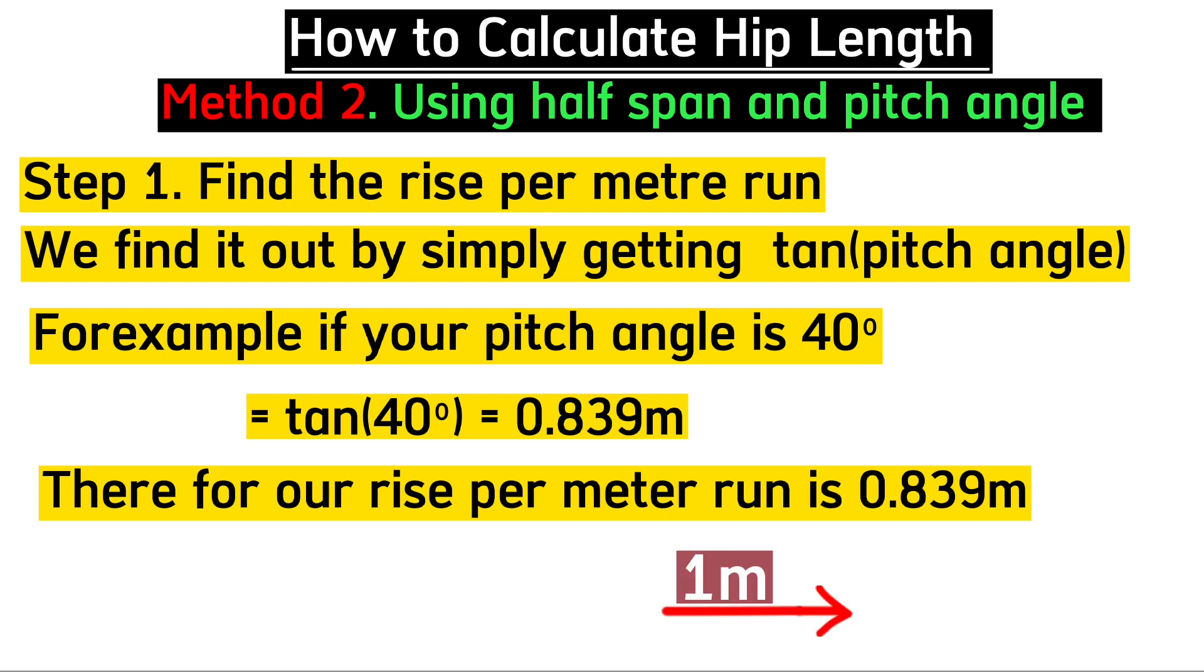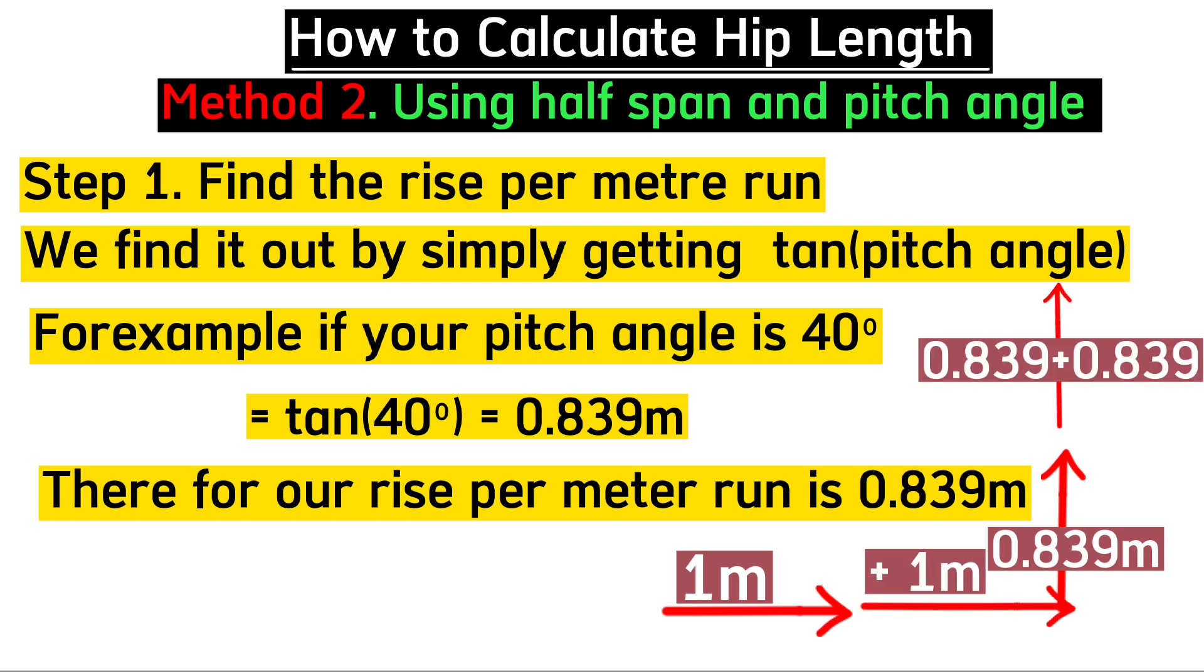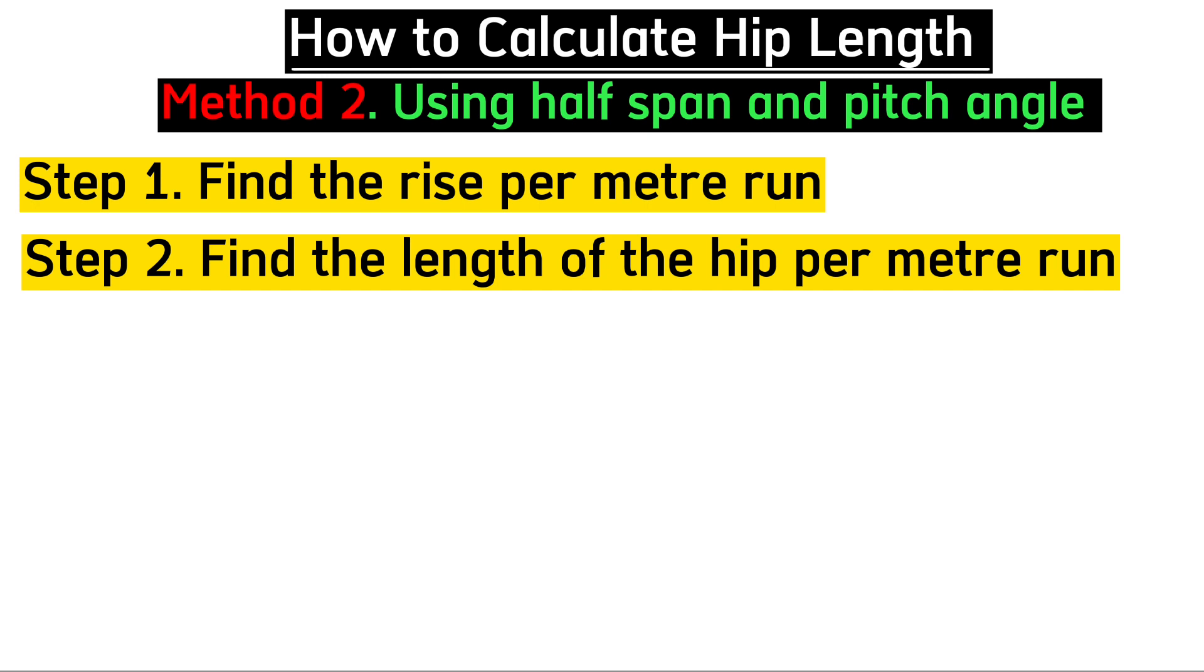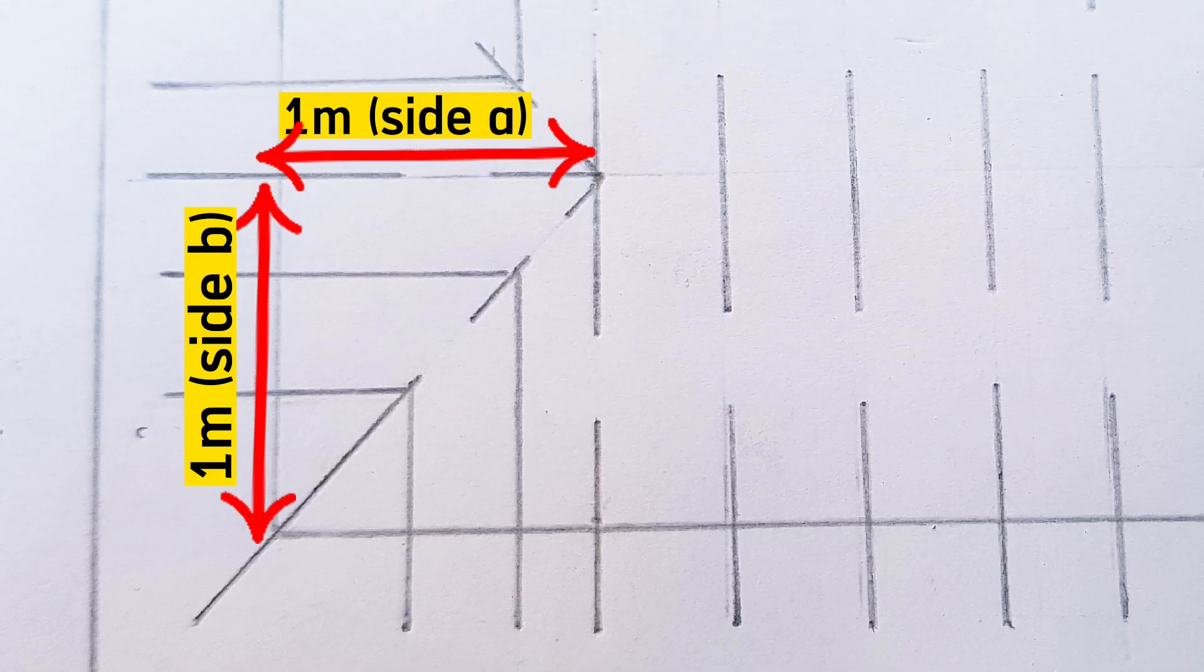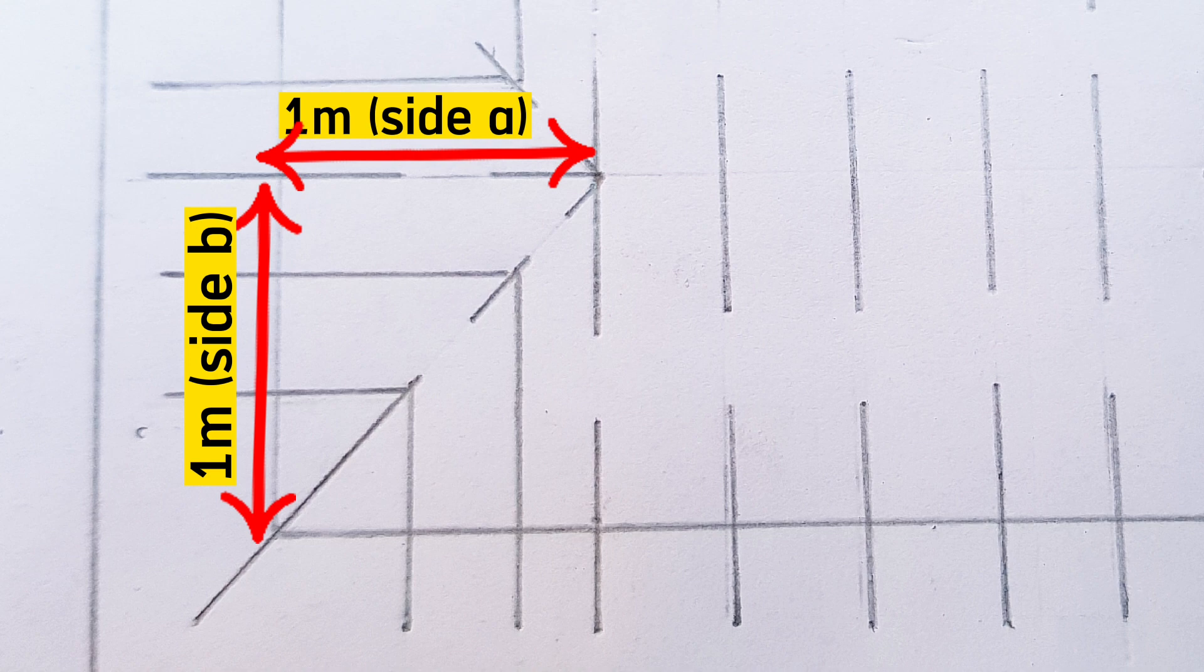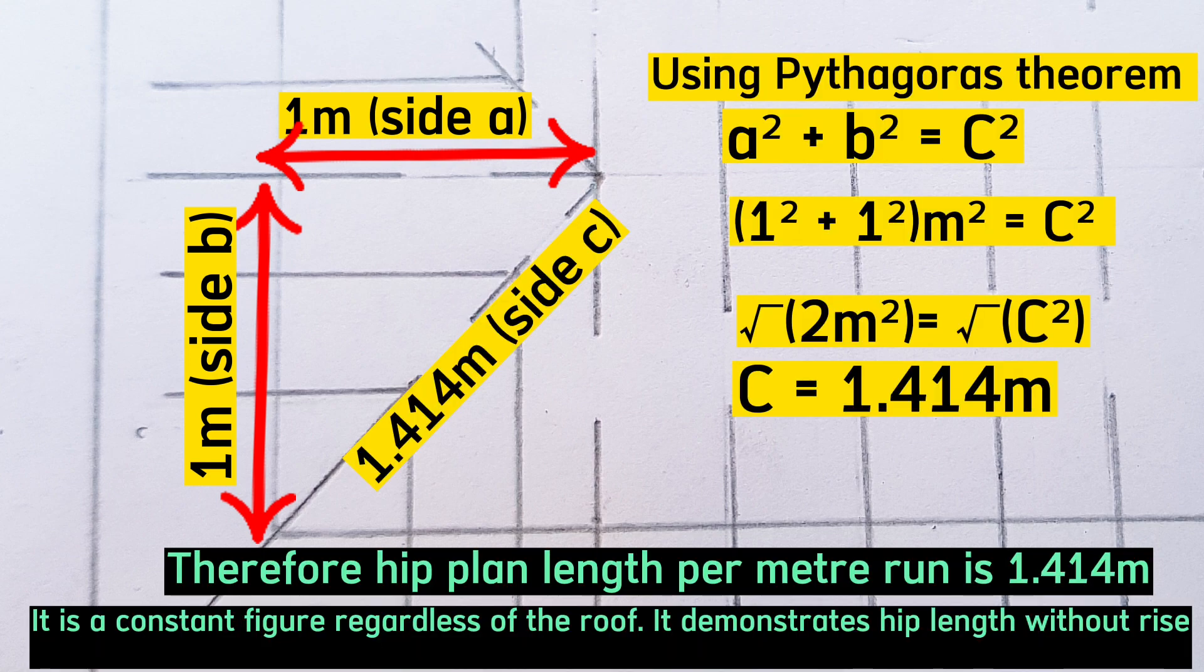For one meter run, your roof will rise by 0.839 meters. For two meter run, it rises 1.678 meters. For three meter run, it rises 2.517 meters. Step two involves finding the plan length of the hip per meter run. Assuming side A is 1 meter and side B is also 1 meter, this makes our hip plan length per meter run 1.414 meters using Pythagorean theorem.